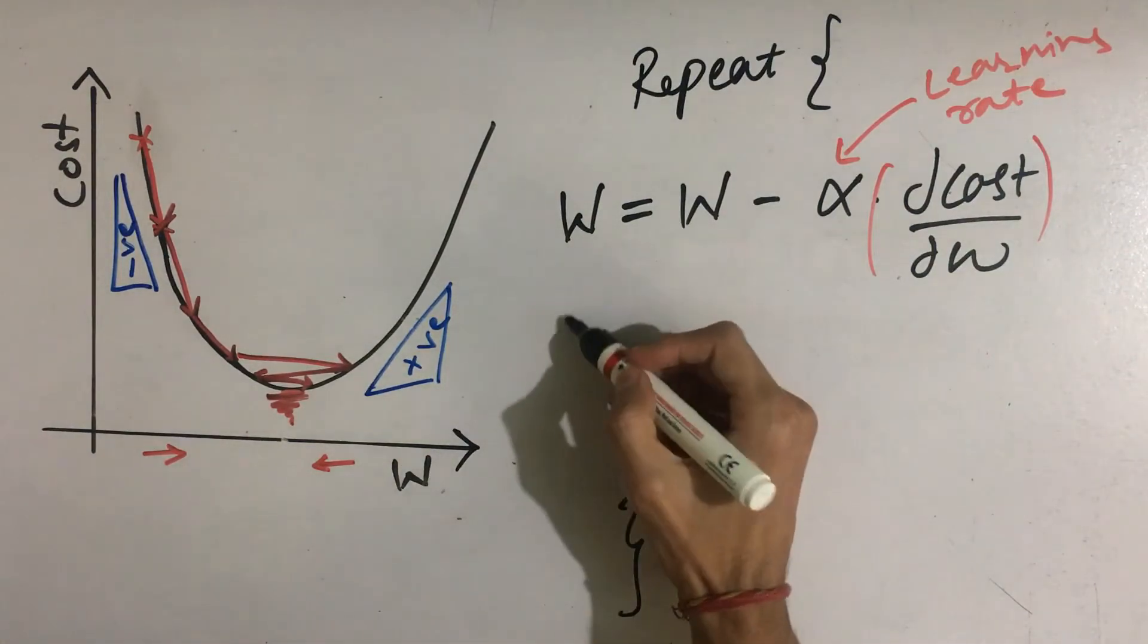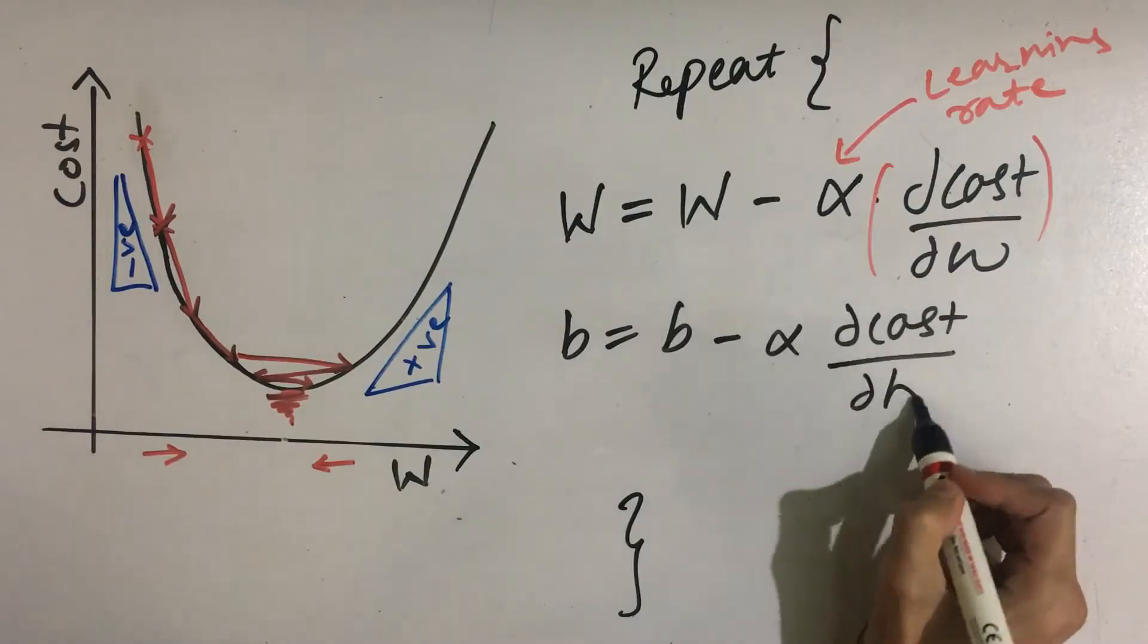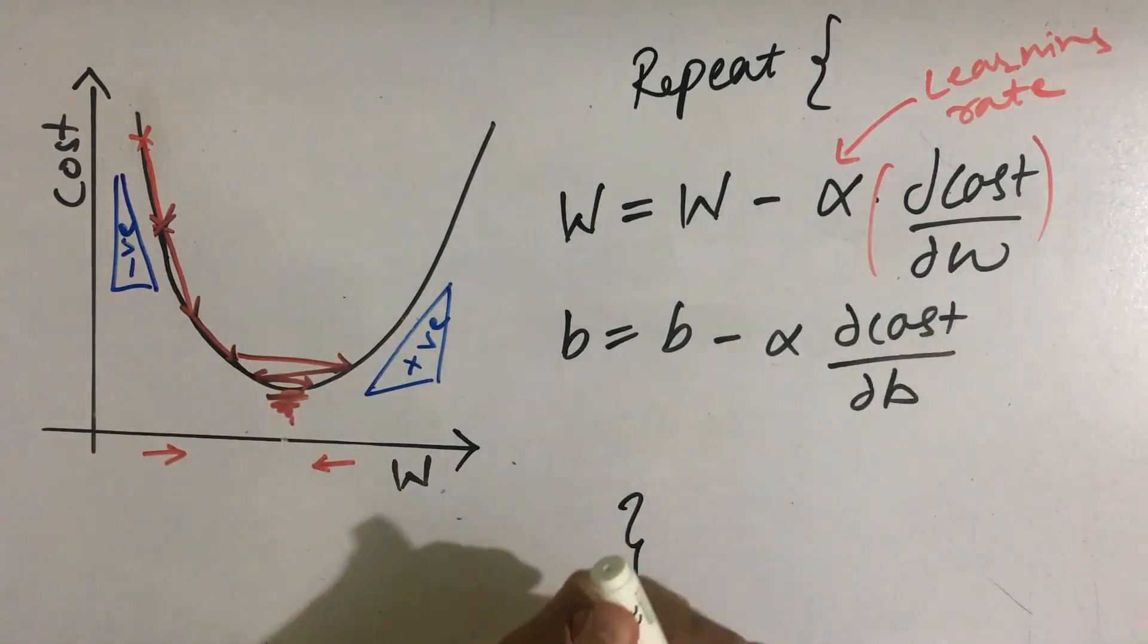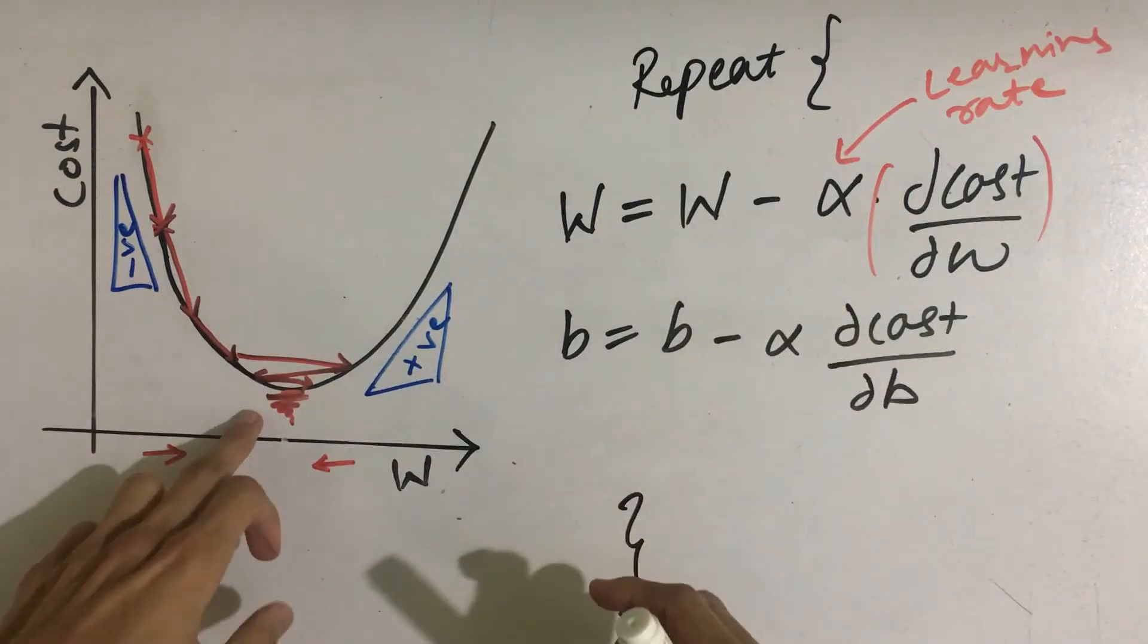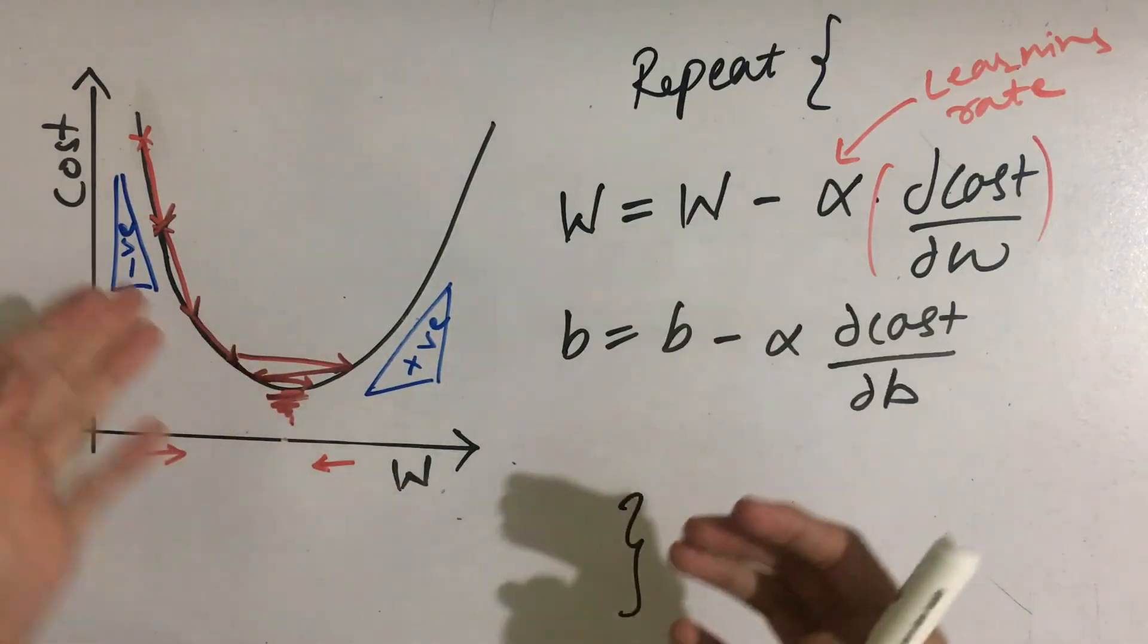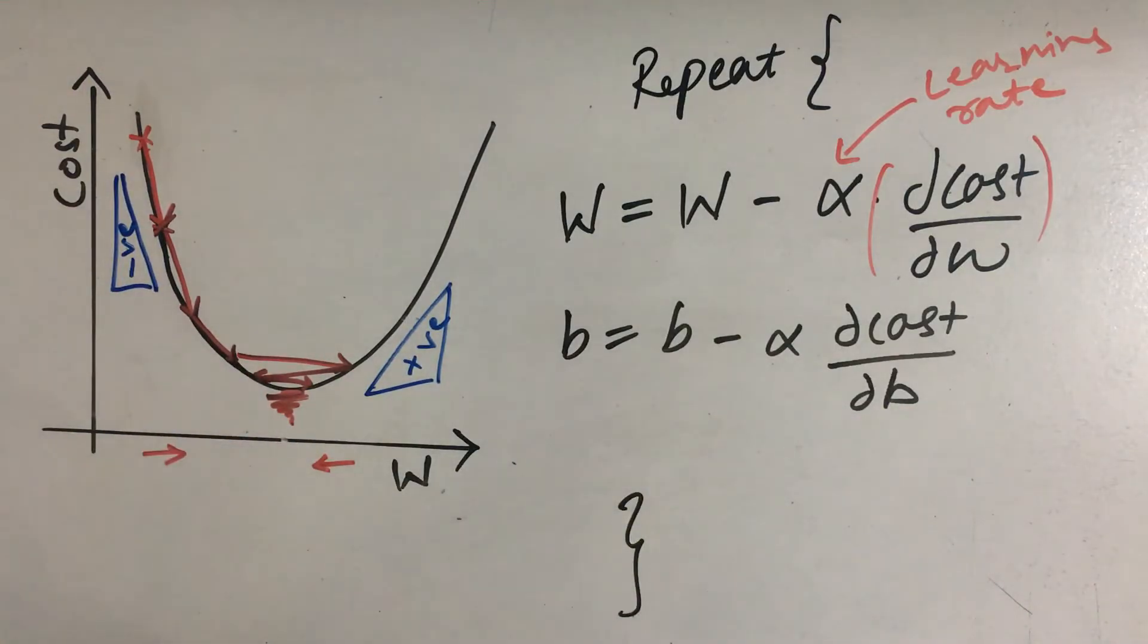Similarly, we need to update the b. Updating both these parameters will lead to the minimum cost function value and thus we will be able to minimize our error.